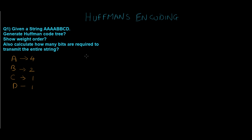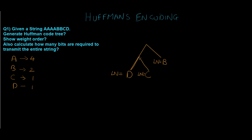Now we'll start making the Huffman code tree, building from the bottom up, starting with the two least-weight values. c and d have the smallest weights, so we join them as leaf nodes. Then we combine their total with the next highest frequency value, b, which is also a leaf node. Finally, the overall total is combined with a, which has the highest frequency, completing the Huffman code tree.